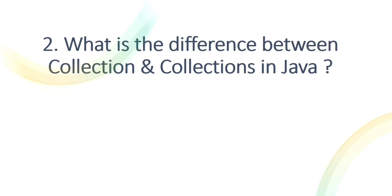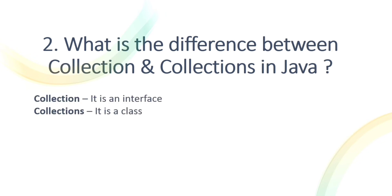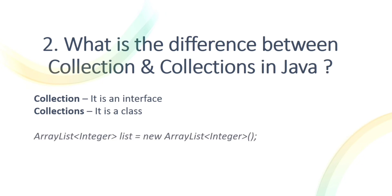The next question is: what is the difference between Collection and Collections in Java? Similarly, Collection is an interface — it is the root-level interface in the Java Collection Framework — whereas Collections is a utility class. Let's see with an example: creating an ArrayList object of type Integer stored in a reference variable called list.